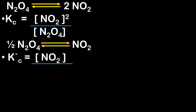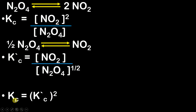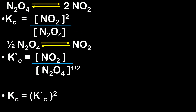So as you change the method of balancing the equation — here we had coefficients 1 and 2, whereas here we have ½ and 1 — the equilibrium constant value also varies. The relationship between Kc and Kc' here is that Kc = (Kc')², i.e., Kc is the square of Kc'. This relationship may differ for other equations.